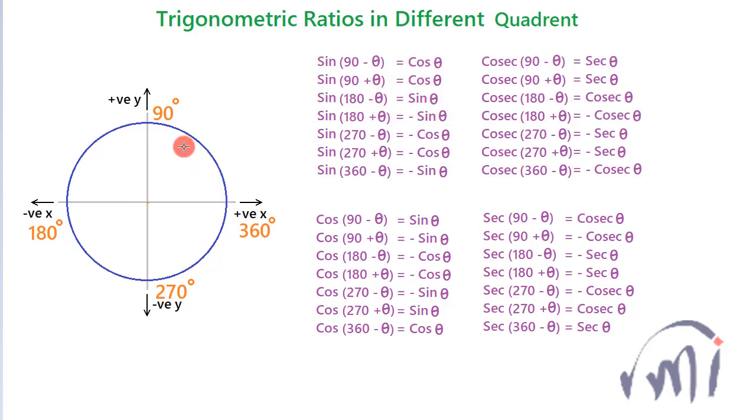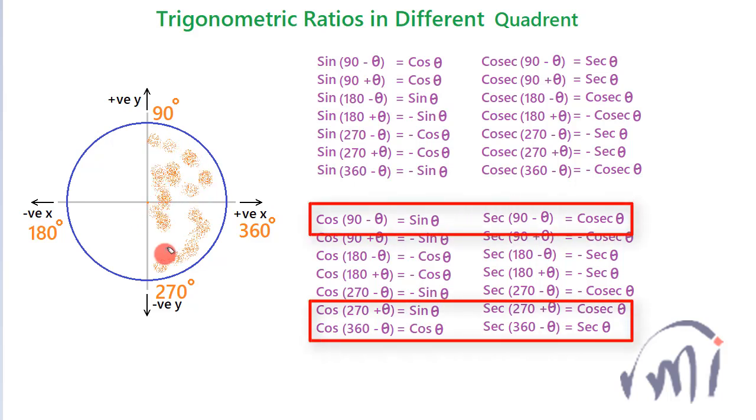And since the x-coordinate represents cos θ, and from this point towards the right-hand side x is positive and towards the left-hand side x is negative, that means cos will be positive if the angle is in this region: θ, 90 - θ, 270 + θ, and 360 - θ.